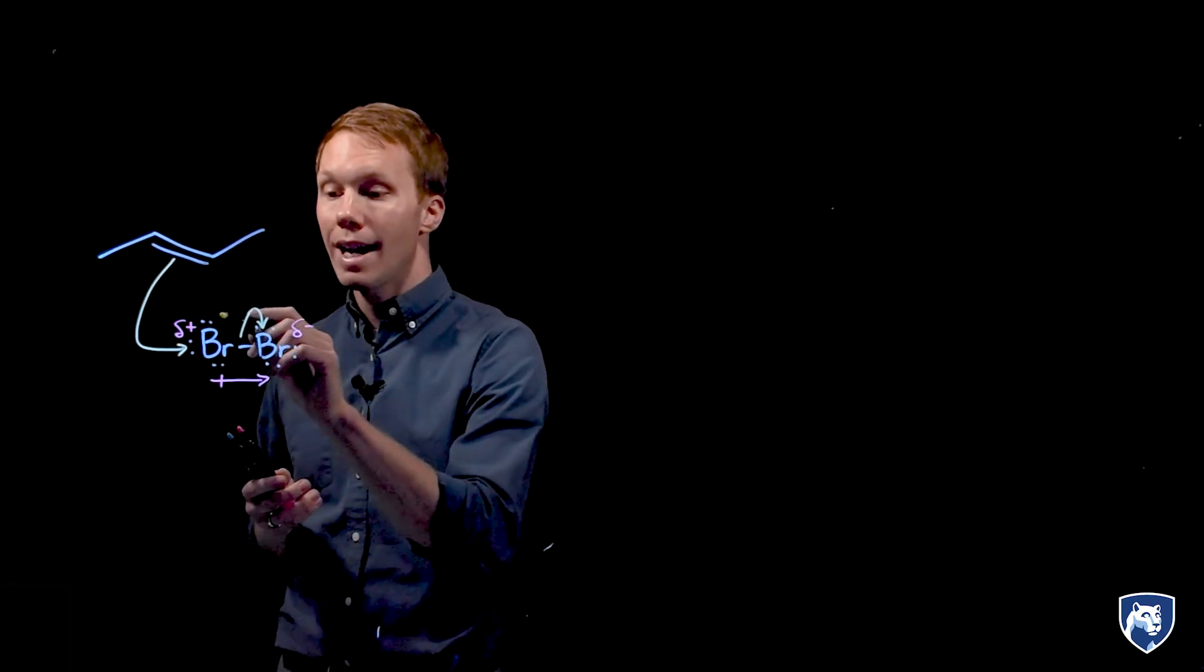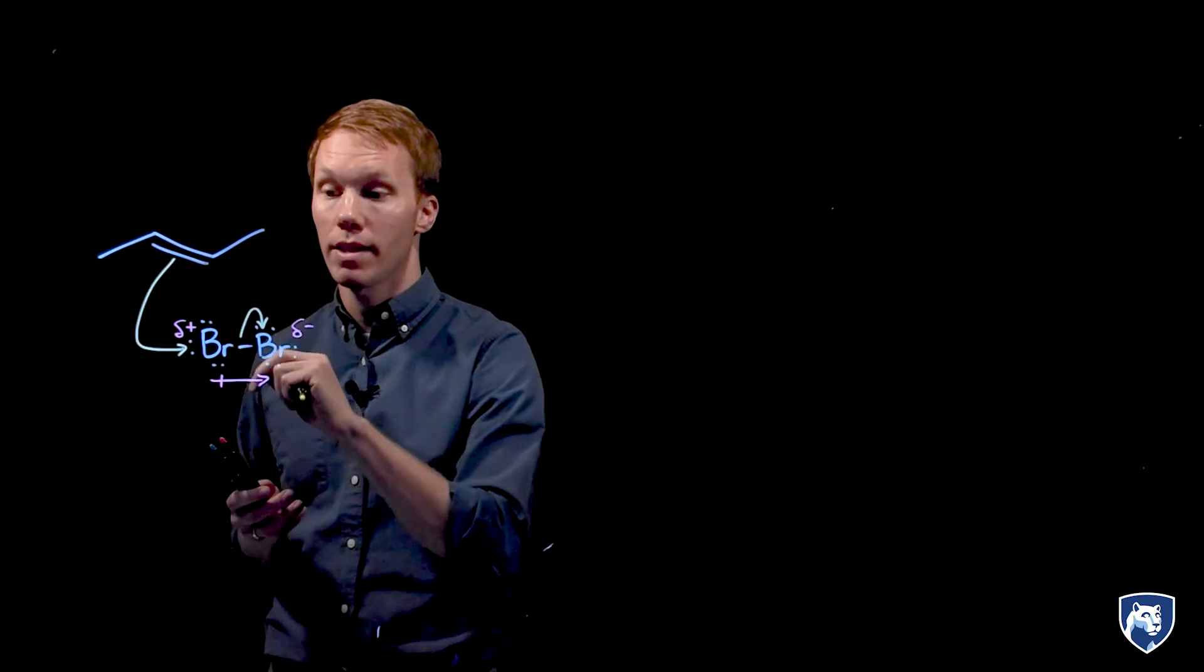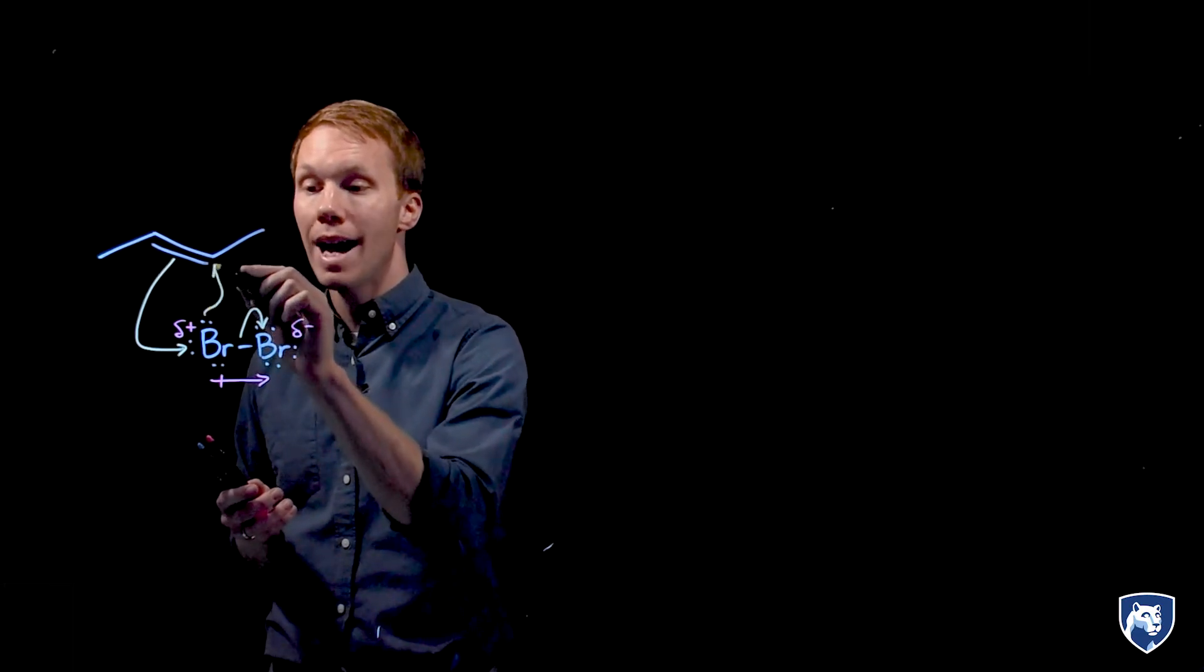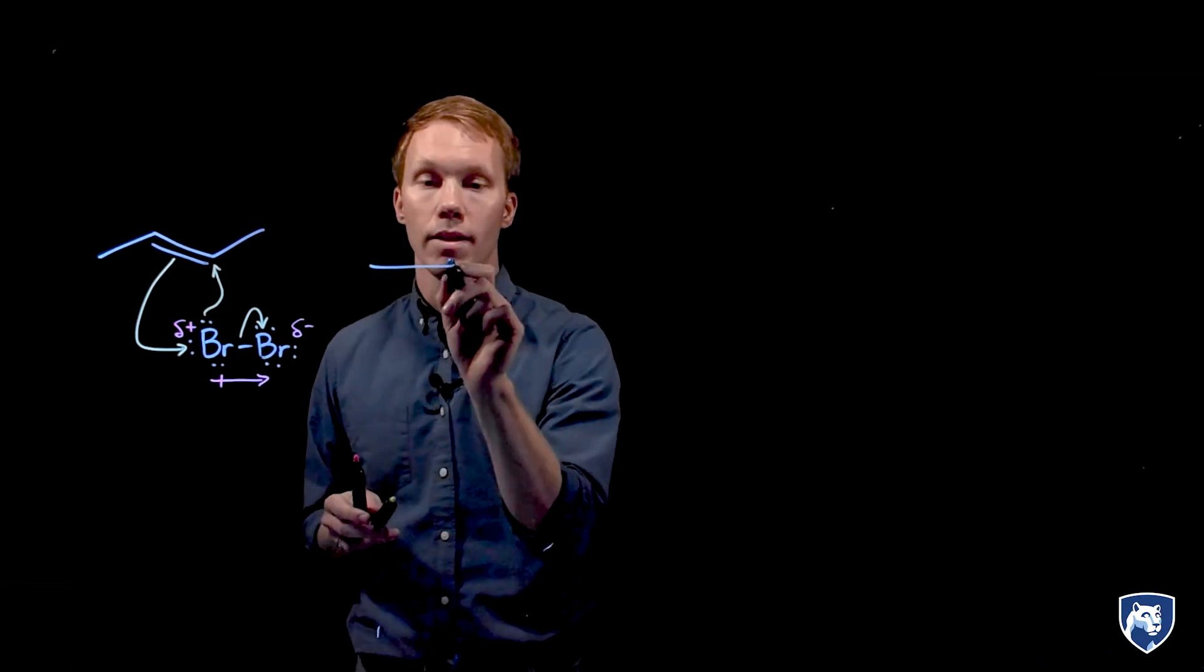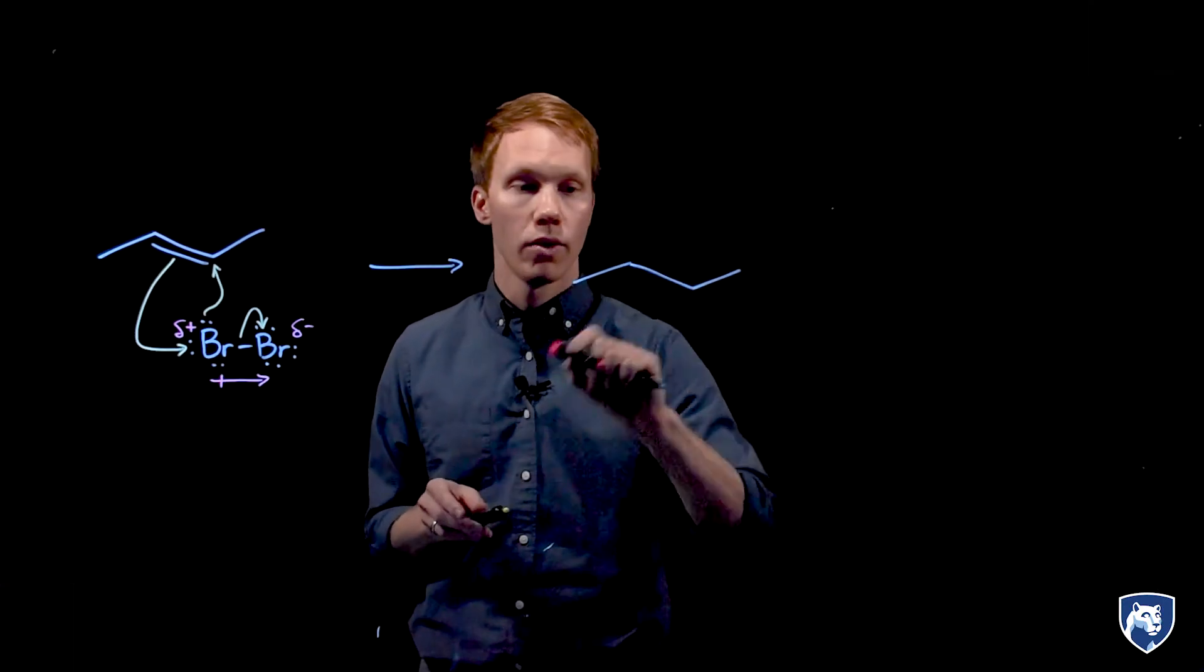To show a carbocation not forming, because if we were to stop right now a carbocation would be present at this position. What we're going to show is that the bromine back donates electrons to form what is called a bromonium ion or generically a halonium ion.